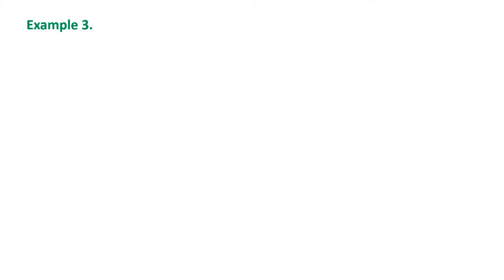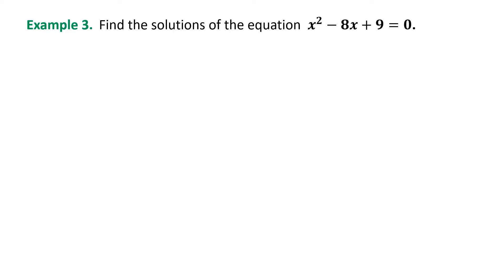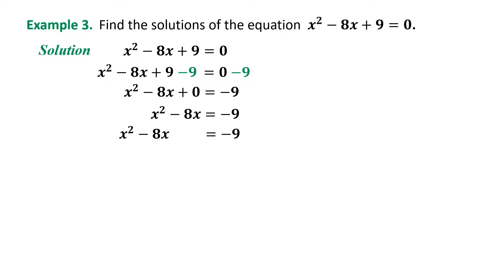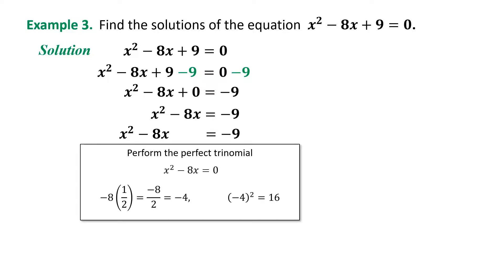Example 3: Find the solutions of x² - 8x + 9 = 0. Solution: Write the given equation x² - 8x + 9 = 0. Since the first term has a coefficient of 1, proceed to transpose +9 to the other side by adding -9 to both sides. The equation becomes x² - 8x = -9. The third term for the perfect square trinomial is positive 16.